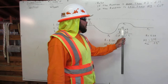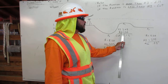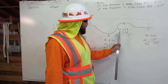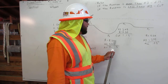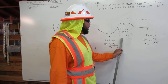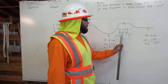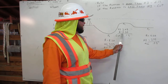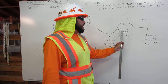Point number two: our height of instrument is 3.45 and our reading is 2.30. On this particular point number two, we are going to have to cut because the reading is less than the height of instrument.